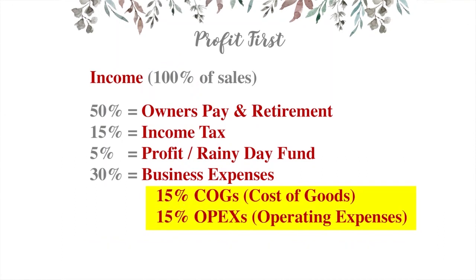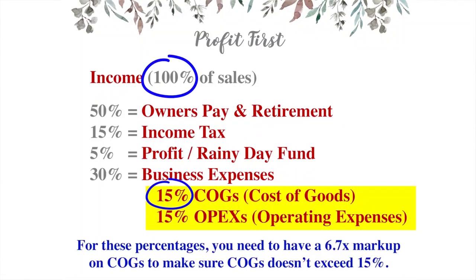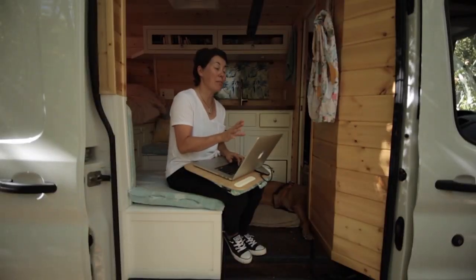Let's do another example — breaking business expenses into fifteen percent cost of goods and fifteen percent operating expenses, which still totals thirty percent. You can use whatever percentages you want as long as they total thirty percent. Same math equation: one hundred divided by fifteen gives us six point seven. So you need a six point seven time markup on your cost of goods to guarantee it doesn't exceed fifteen percent.